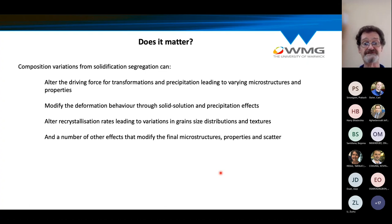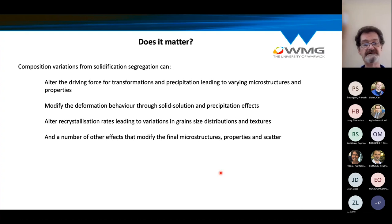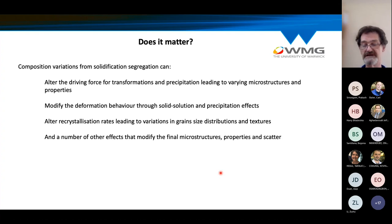We'll see differences in the driving force for transformations and precipitation, leading to varying microstructures and properties. Deformation behavior will differ - if there's variation in solid solution and precipitation effects during cold deformation, we'll get differences in stored energy that will potentially affect recrystallization behavior and grain size distributions. Segregation at surface-exposed conditions would affect corrosion resistance, but I'm going to principally look at the mechanical properties and microstructure along the route I've just described.